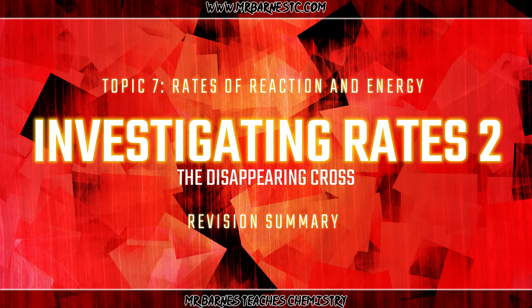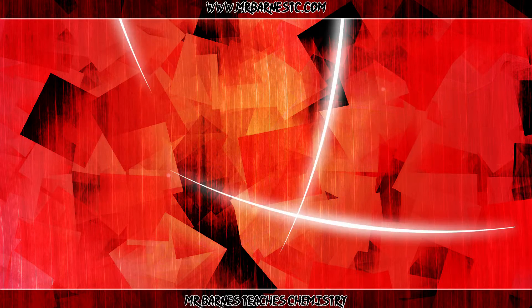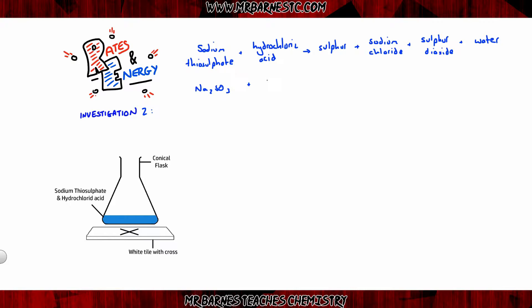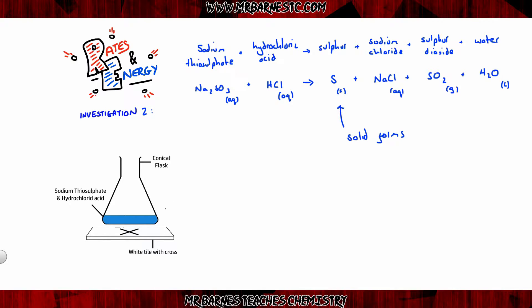On to the second investigation: the disappearing cross. We're going to take sodium thiosulfate and react it with hydrochloric acid. This produces sulfur, sodium chloride, sulfur dioxide, and water. The symbol equation is: Na₂SO₃ + HCl → S + NaCl + SO₂ + H₂O. The key thing is the state symbols — sulfur is a solid. If it's a solid it's going to go cloudy, and if it goes cloudy it will look as though the cross disappears.